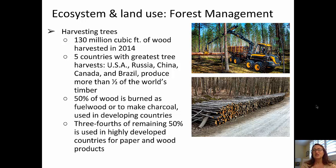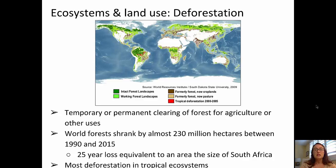Our forests are under attack from deforestation, which is the temporary or permanent clearing of forest lands for agriculture and other uses. In fact, world forests shrank from 1990 to 2015 by almost 230 million hectares — a 25-year loss equivalent to the size of South Africa. Most of the deforestation is in tropical ecosystems, as you can see on this map.